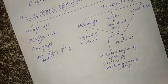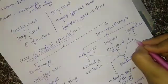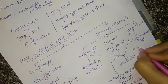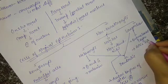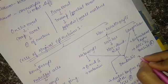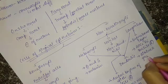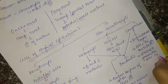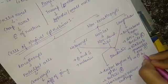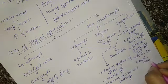Langerhans cells are present in the suprabasal layer. They are antigen-presenting cells, contain Birbeck granules, are absent in the junctional epithelium, and are modified monocytes.